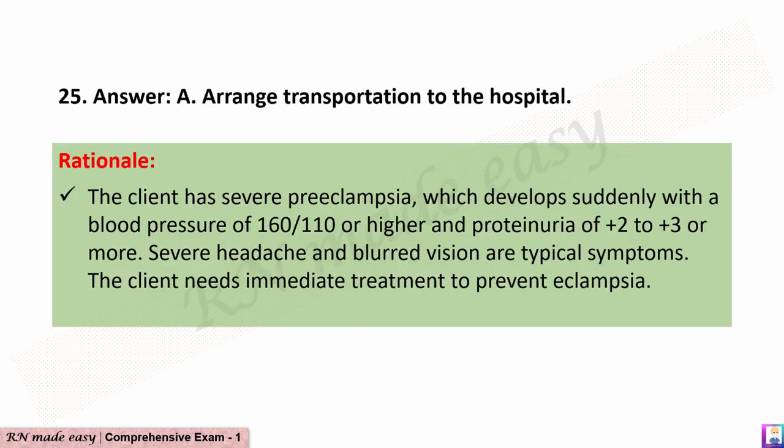The correct answer is A: Arrange transportation to the hospital. Rationale: The client has severe preeclampsia, which develops suddenly with a blood pressure of 160/110 or higher and proteinuria of +2 to +3 or more. Severe headache and blurred vision are typical symptoms. The client needs immediate treatment to prevent eclampsia.